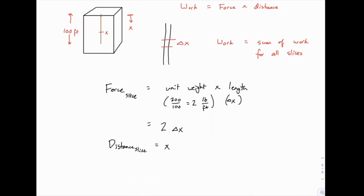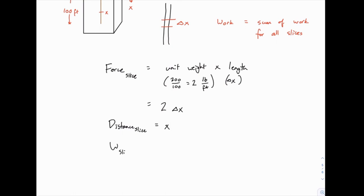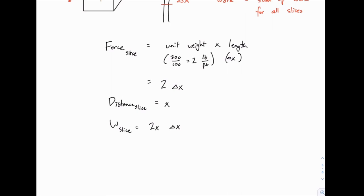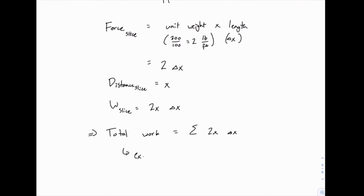Once we have those two, the work for one slice is just equal to force times distance, the product of those two. 2 times delta x times x, and of course we'll write the delta x at the end because it's going to turn into dx in just a minute. And this means that the total work is the sum of all those. And of course as we move from an approximation to the exact value, work will be the integral of 2x dx.